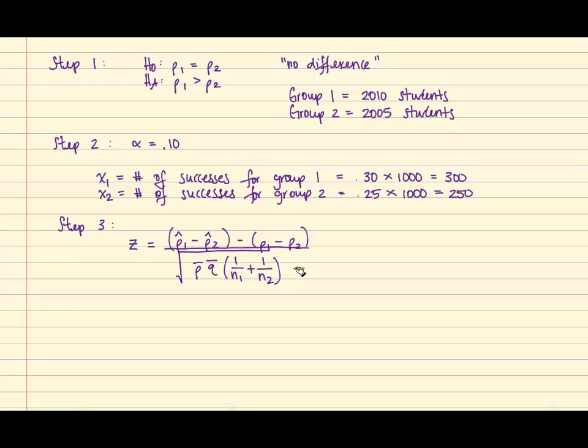So we'll need to identify these pieces first. Recall that P hat 1 is equal to x1 over N1 and that's .30. P hat 2 is equal to x2 over N2 and that's equal to .25.